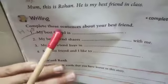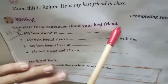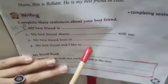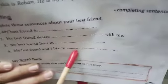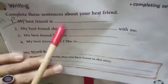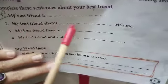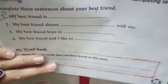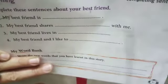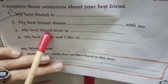Another thing which you have to do from this exercise — come to page number 37. Complete these sentences about your best friend. Whoever is your best friend, you have to complete the sentences about him or her. 'My best friend is dash' — you will write his or her name. 'My best friend shares dash with me' — whatever she or he shares with you, you will write that.